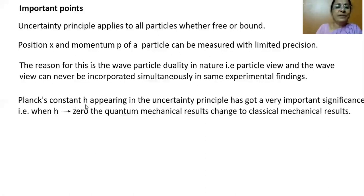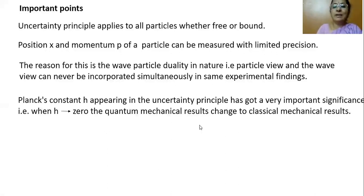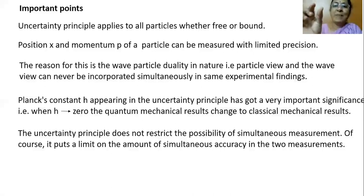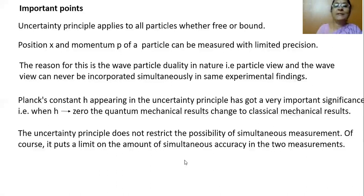Planck's constant h appearing in the uncertainty principle has great significance. When h becomes zero, quantum mechanical results change to classical mechanical results. The uncertainty principle does not restrict simultaneous measurement; it only puts a limit on the accuracy of two simultaneous measurements. It never says two physical parameters cannot be measured simultaneously — it just says that if you measure simultaneously, the accuracy will be limited.